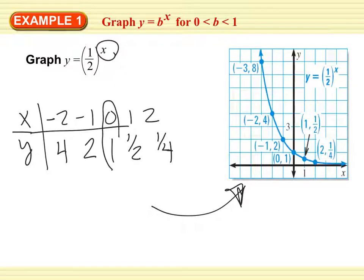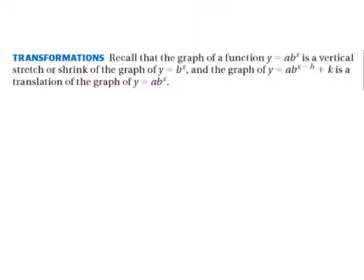And then we go ahead and graph them. This is always going to be one of our points, right? It's right there. And then 1, b is always going to be a point. It's right there. Cool? That was just one example. Now let's talk transformation. We already talked transformation with the growth.